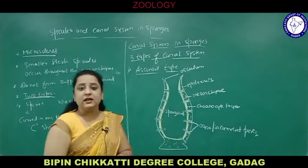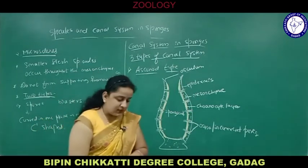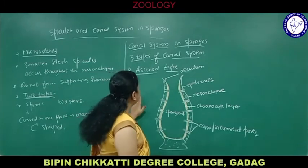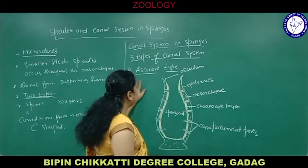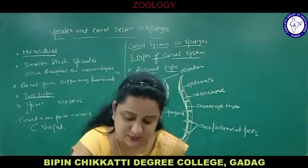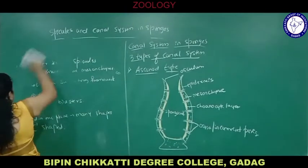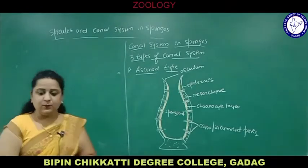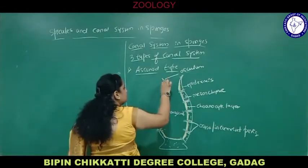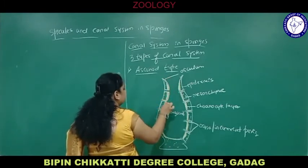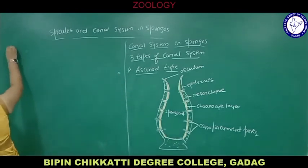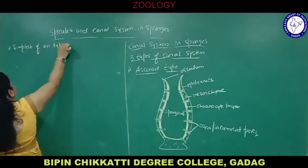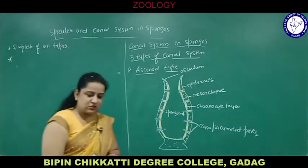Canal system in sponges plays a very important role in transport of water, absorption of digested food, removal of waste substances, and transfer of gametes. The asconoid type is the first and simplest of all three types — simple in both structure and function. It has a radially symmetrical vase-like body enclosing a cavity called the spongocoel.